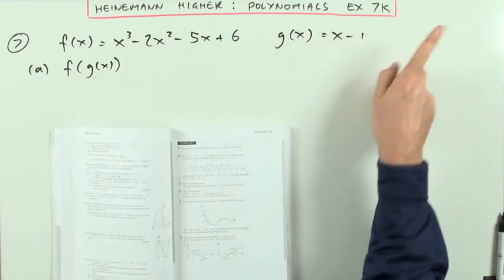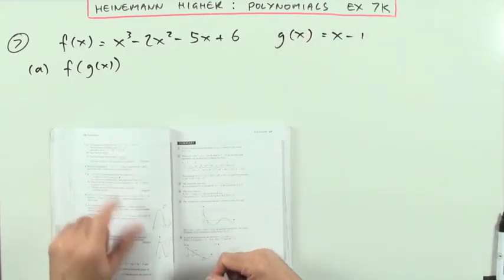Heinemann Higher, Chapter 7 on Polynomials, Exercise 7K, the mixed exercise at the end. Number 7.